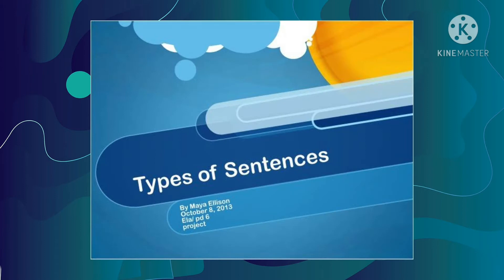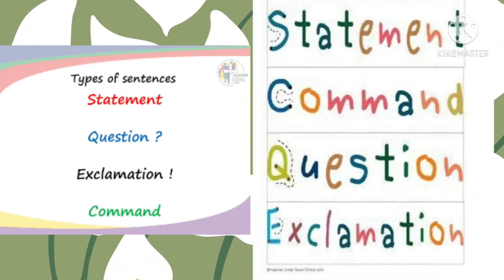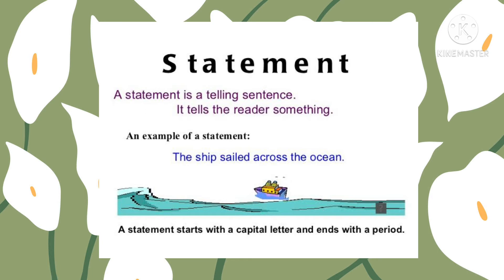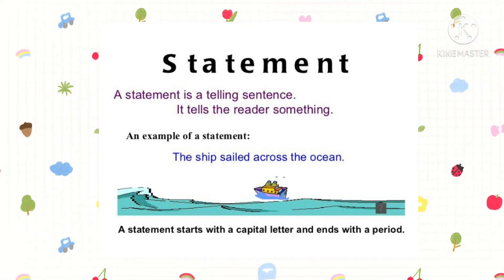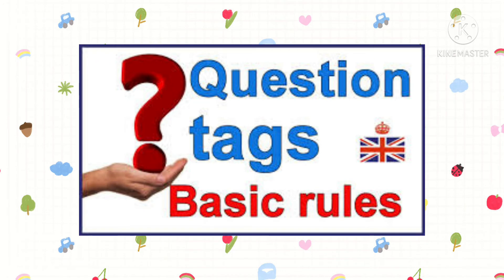Now we will understand a few different types of sentences. First we will discuss the statement. Sentences that state something or give us information are called statements. For example: 'Kavitha switched on the television.' 'Grey clouds covered the sky.' These sentences are telling us something, passing some information. So they are said to be statements. They always start with a capital letter and end with a full stop.